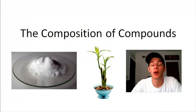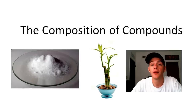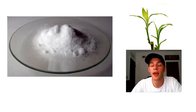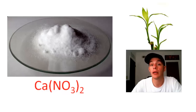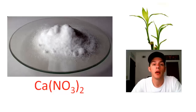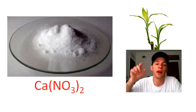In this video we're going to talk about the composition of compounds. On the left side of the screen is a photo of a sample of calcium nitrate. Calcium nitrate has the formula Ca(NO3)2. If you weren't able to write that formula given the name of calcium nitrate, you might need a little more practice with naming and writing formulas for ionic compounds, and I do have a video for that linked in the description.